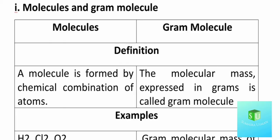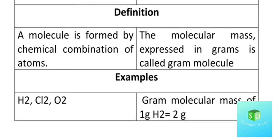A gram molecule also has a molecular mass. Normally, molecular mass has the unit AMU, but when you express it in grams you call it the gram molecular mass, or gram molecule. For example, you have molecules like H₂ (hydrogen), Cl₂, and O₂ (oxygen). If you take the molecular mass of H₂, it is 2 — when you express that as 2 grams, you call it the gram molecular mass.